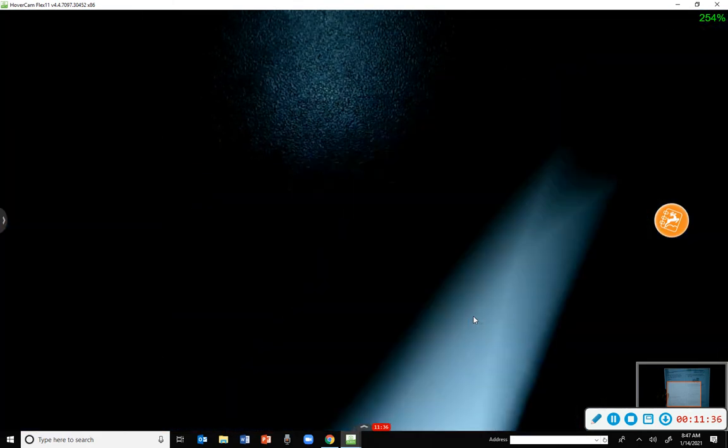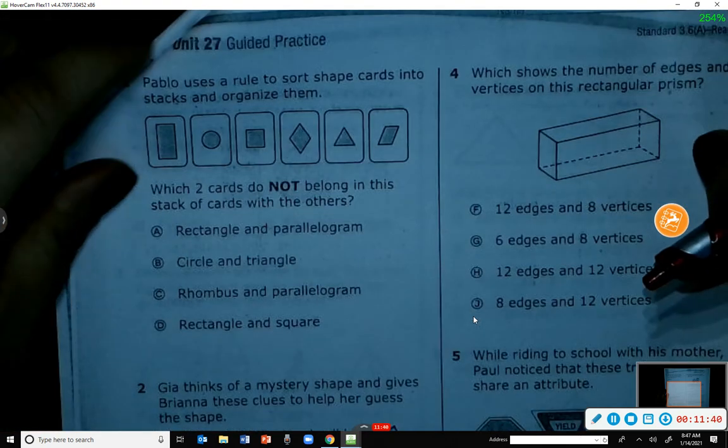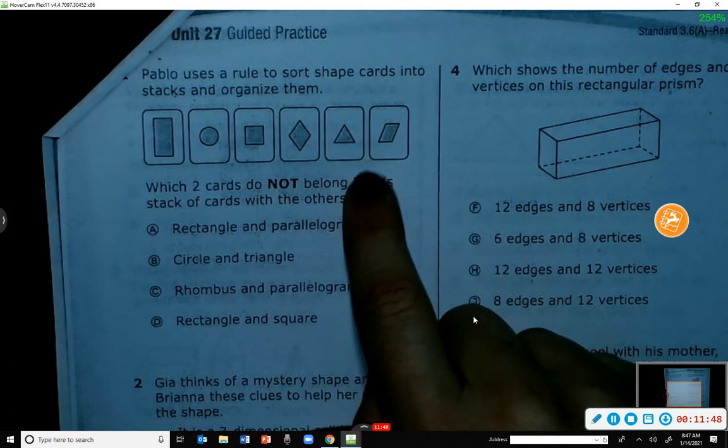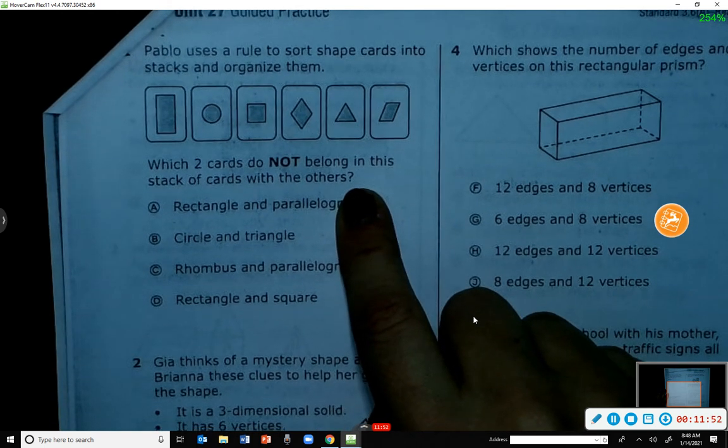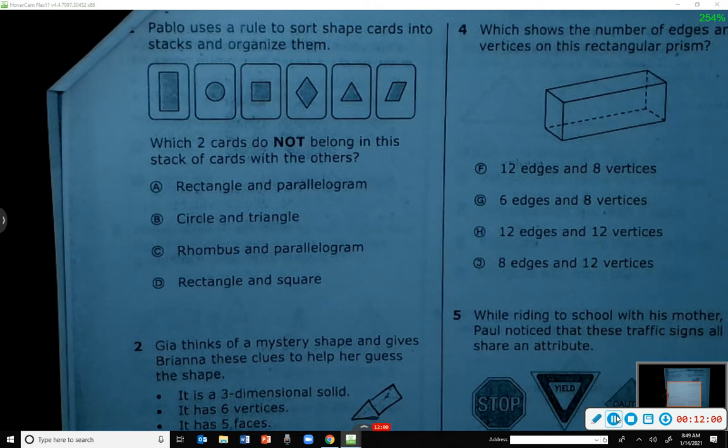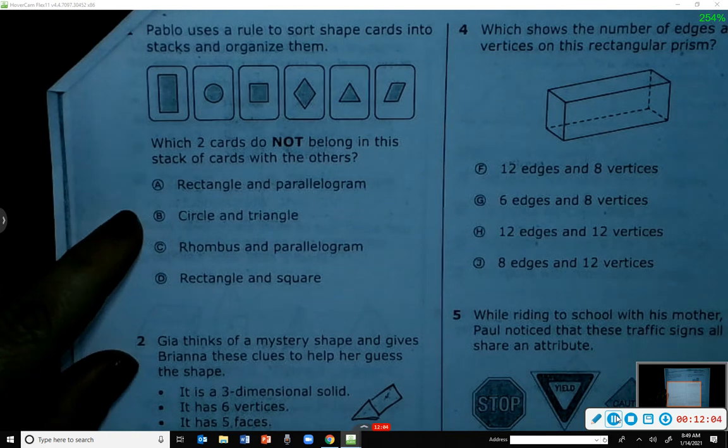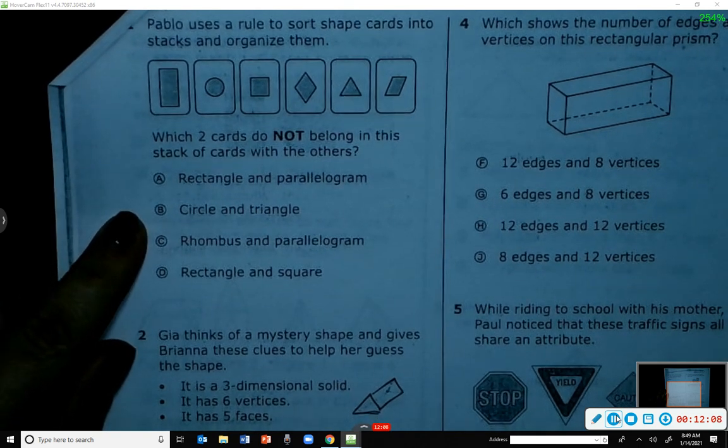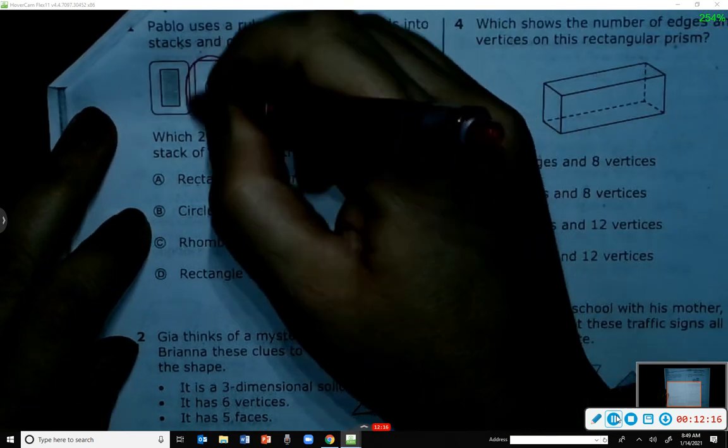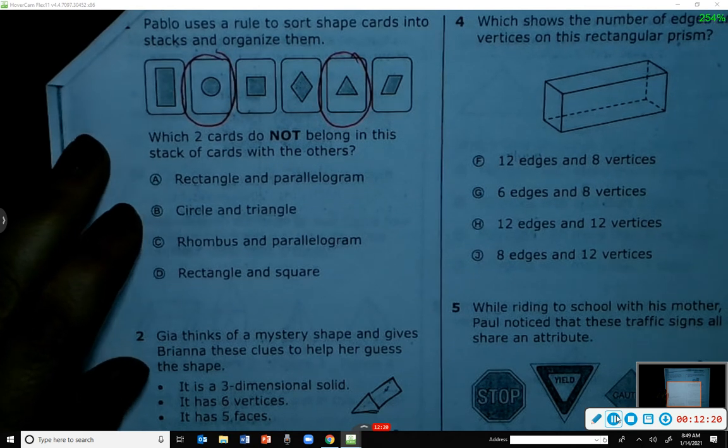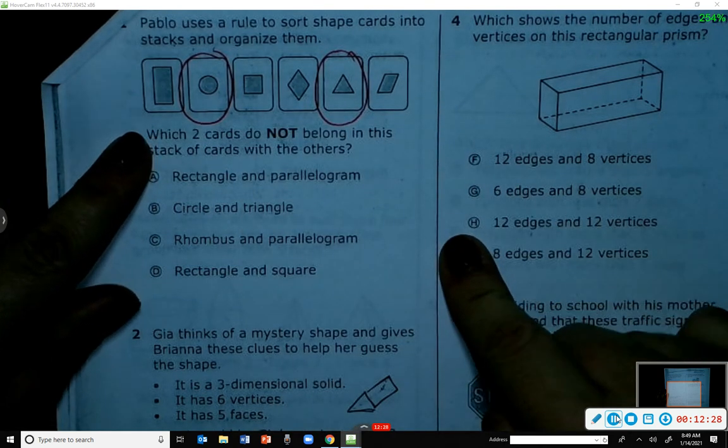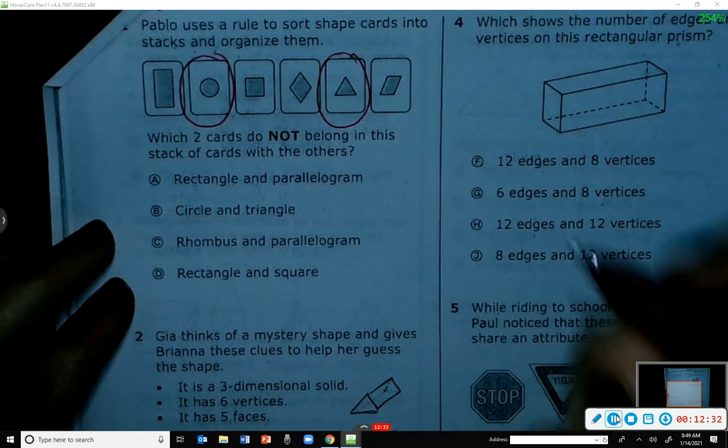Let's look at the next page. I want you to try number one on the next page on your own. It says Pablo uses a rule to sort shape cards into stacks and organize them. Which two cards do not belong in his stack of cards with the others? So we took a few minutes, we paused the video for those of you at home. We looked at our answers and everybody got it right here. The two cards that did not belong were the circle and the triangle because why? Because they don't have four sides. All of the other ones had four sides, which we would call them quadrilaterals.